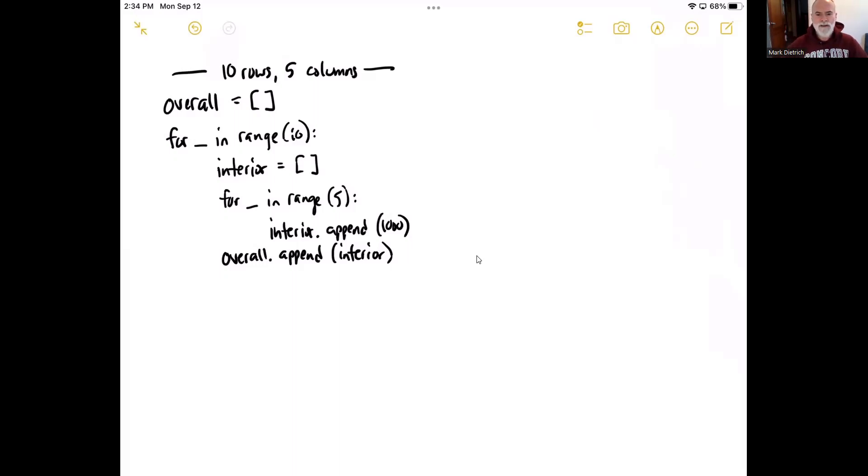In this case, though, we're going to build a balanced matrix or a balanced two-dimensional list where the rows and columns are all consistent. The number of columns is consistent throughout the rows. So this code here will do exactly what we're hoping for in the for loop approach. This is going to create a 10 row, five column, two-dimensional list. And all of the values are going to be a thousand.